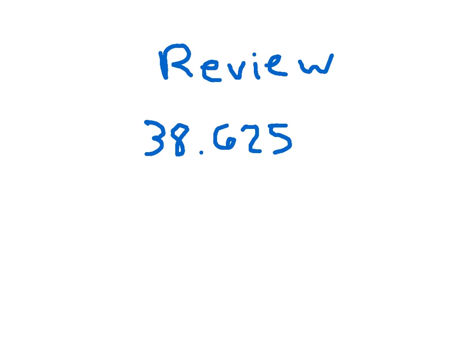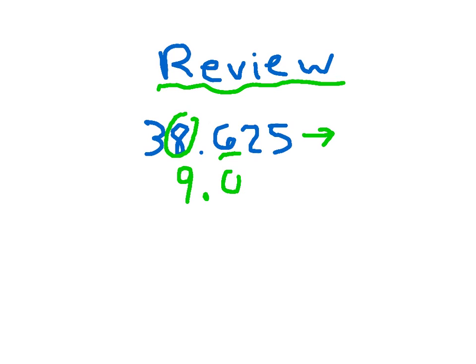Here's our review. It doesn't matter how many decimal places appear after the decimal point — to round to the nearest whole number, you still find the 1's place. What digit is in the 1's place? Right, 8. What do we do with the 8? We circle it. And we'll underline the 6 — that's the number we look at to see whether the 8 stays the same or increases. In this case the 8 increases. Flexing our muscles like a hero, digits to the right change to 0, all other digits stay the same. So 38 and 625 thousandths rounds to 39.